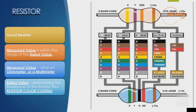In this lesson, we are going to talk about resistors and how to identify if a resistor is in good shape or broken. If it is a good resistor, the measured value must be within the range of the rated value. You can determine the resistor value using an ohm meter or multimeter, or by using the color band coding.